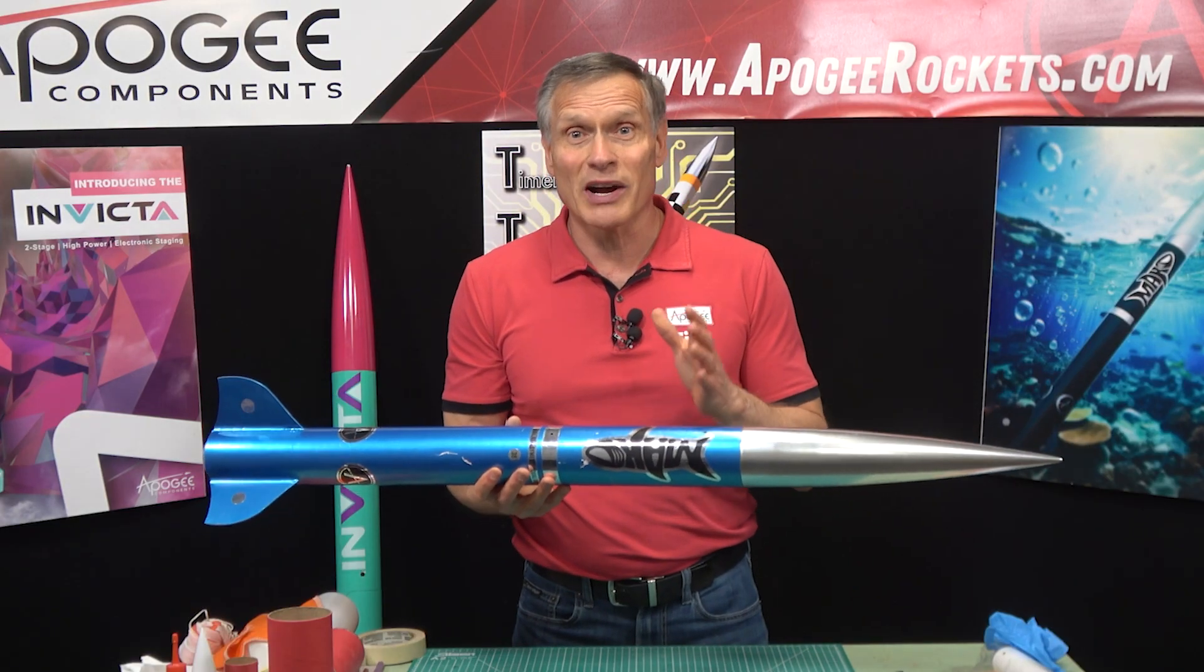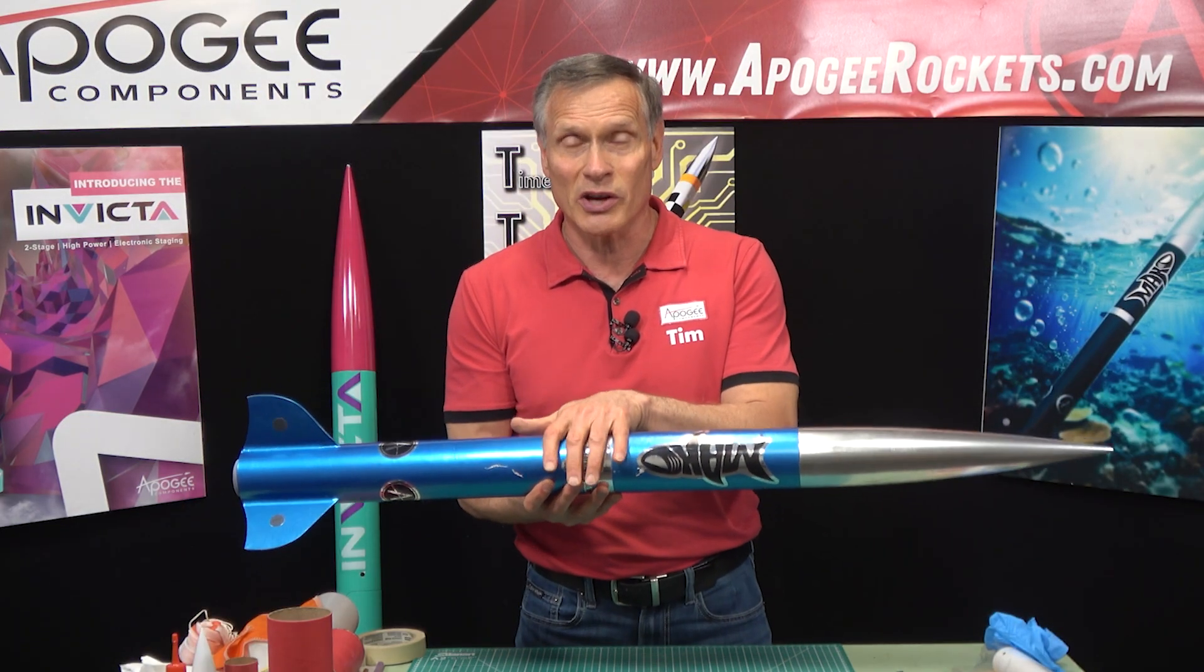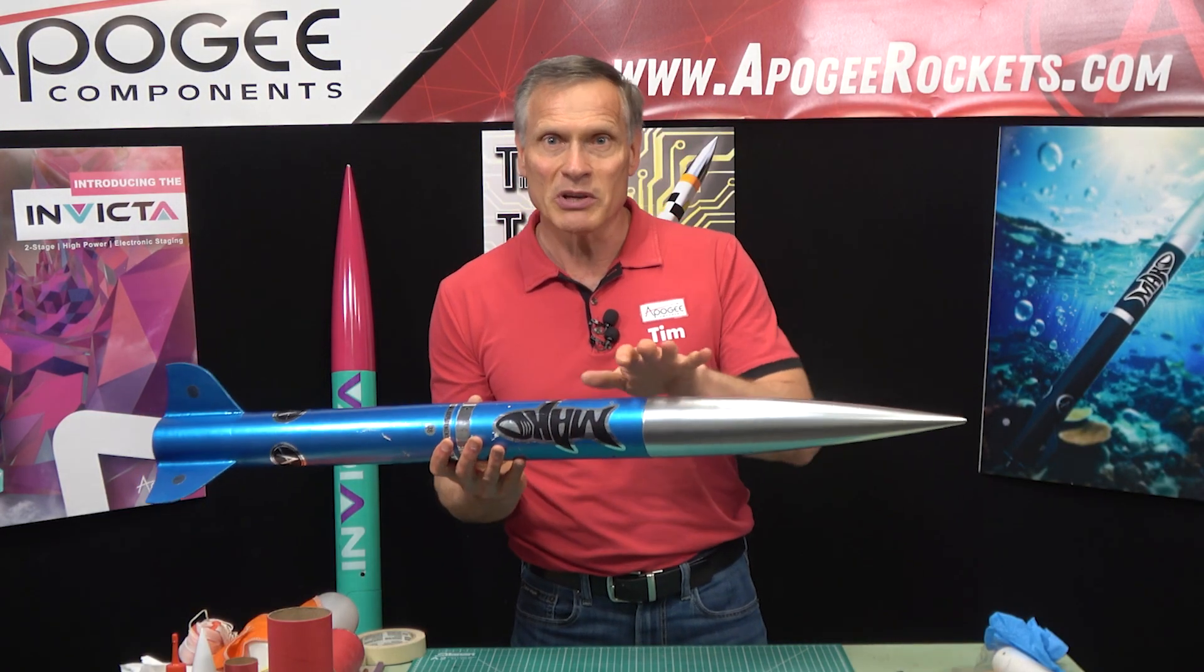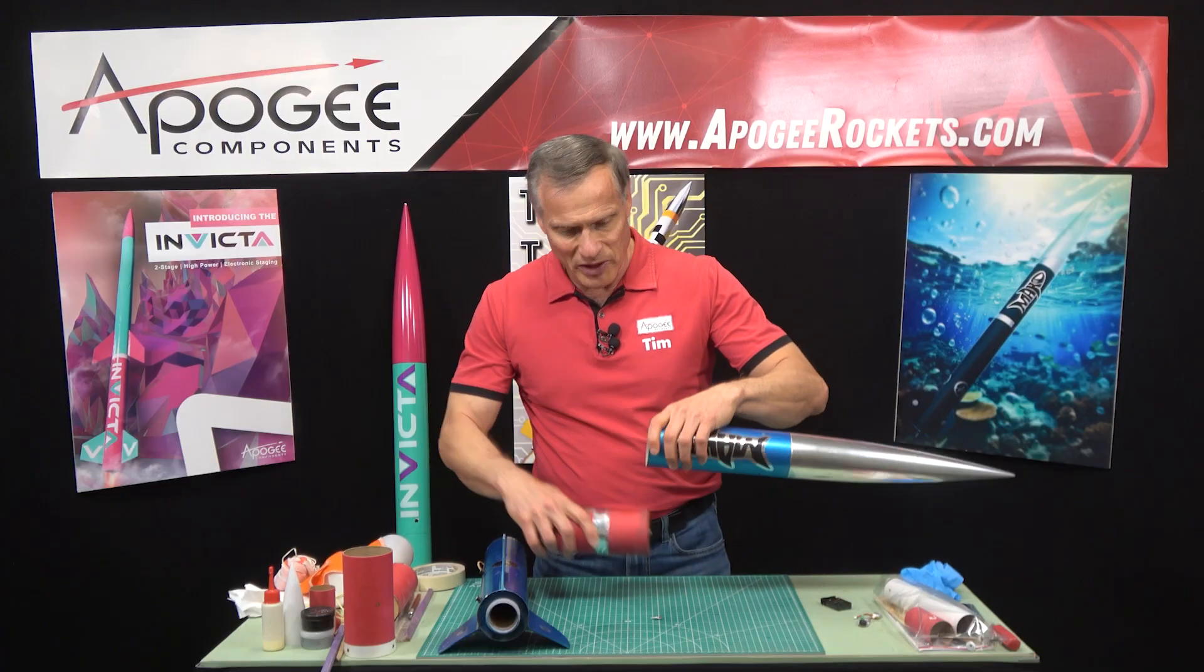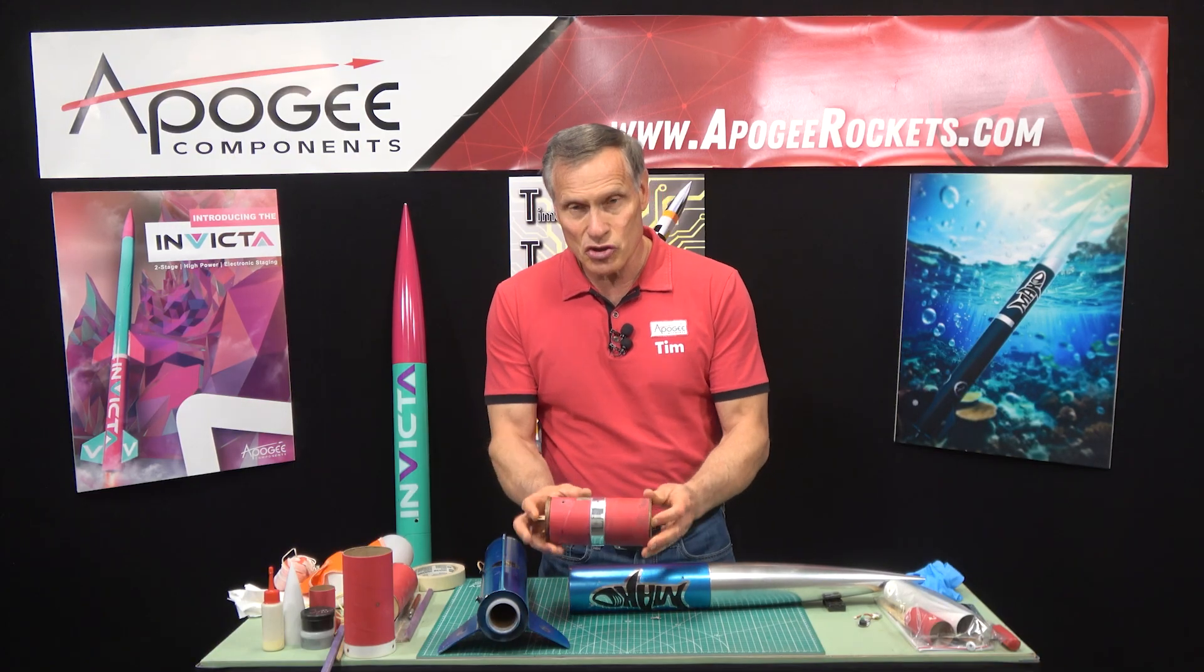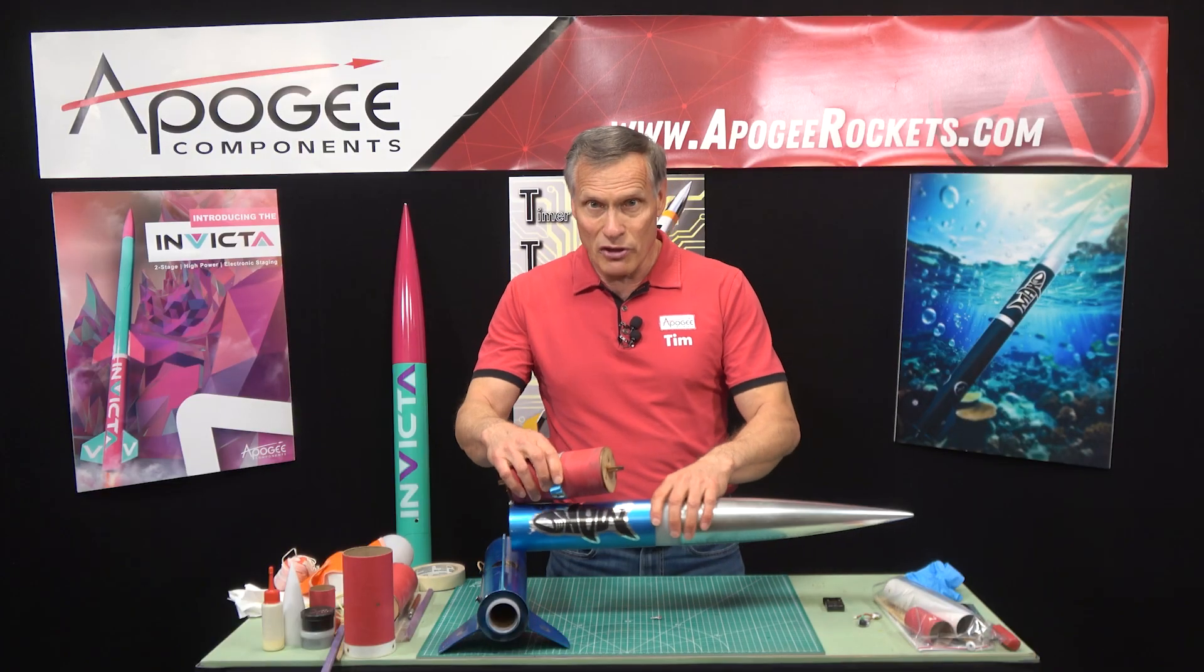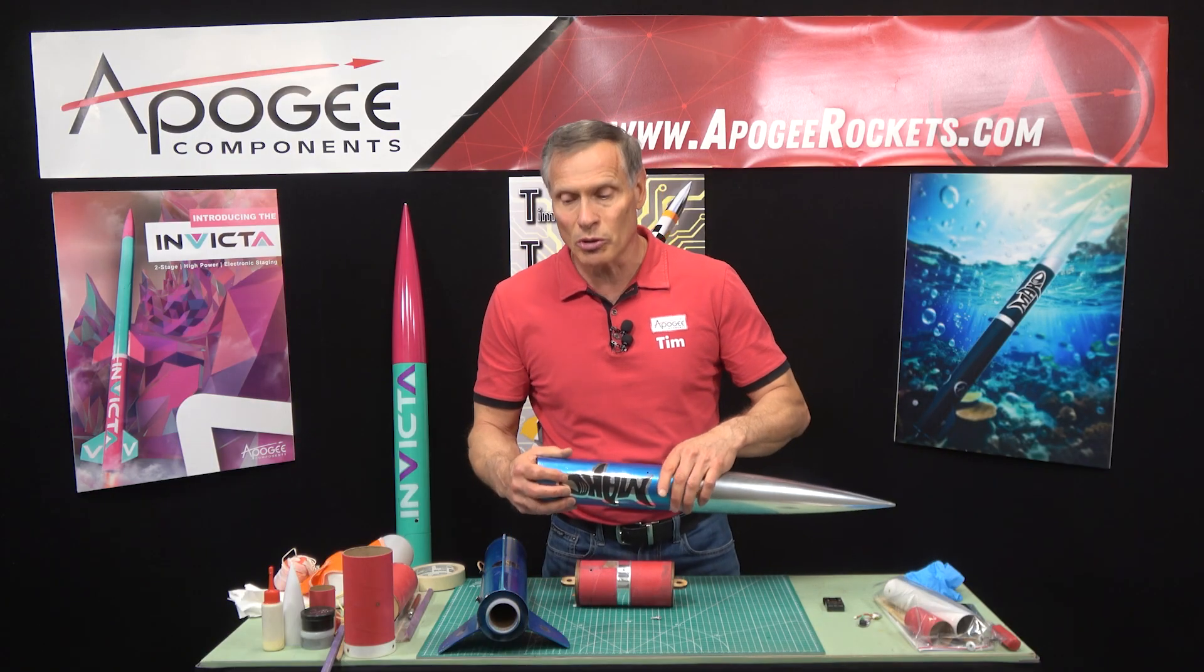Sometimes your rocket is not configured correctly where you can put the electronics bay in the middle and you'd like to move it towards the front and this would be called head-end dual deployment because it's at the head of the rocket. So what we want to do is put that electronics bay up near the nose cone but because of the shoulders on it it's going to interfere with the shoulder on the nose cone. So is there a way to move this even further forward and that's what we're going to do with head-end dual deployment.